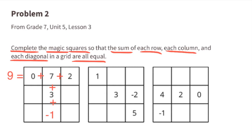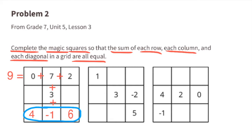Going to the middle column: 7 plus 3 minus 1 equals 9. The bottom row: 4 minus 1 is 3, and 3 plus 6 is 9. The right-hand column: 6 plus 1 is 7, plus 2 is 9, so the right-hand column has a sum of 9.